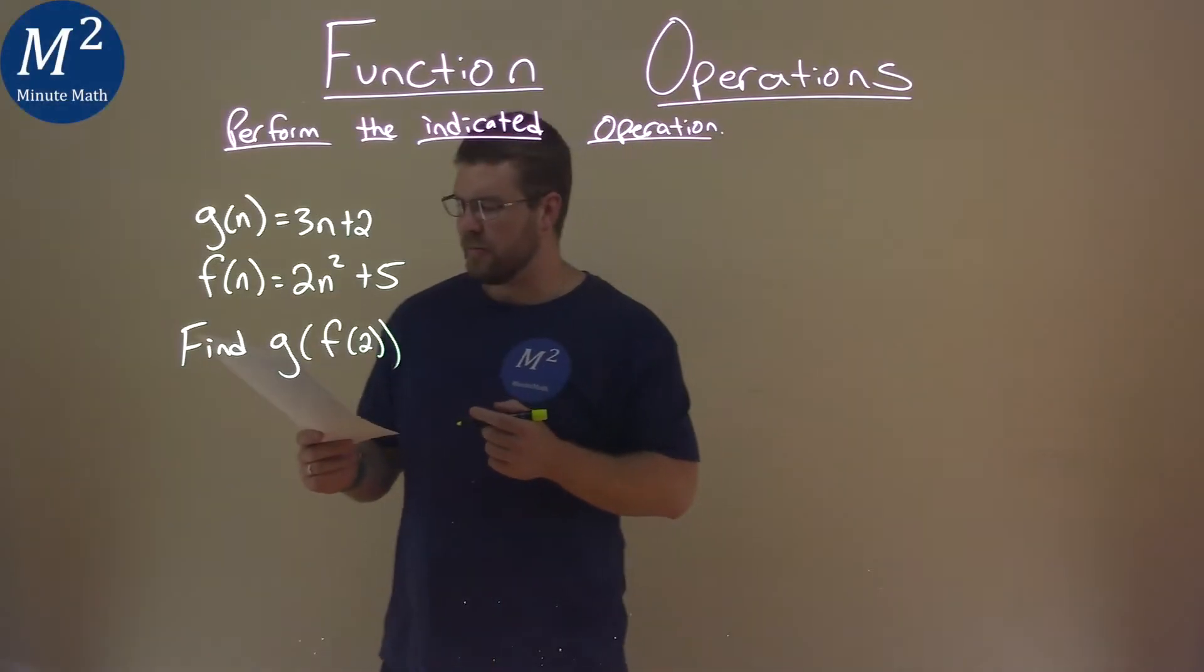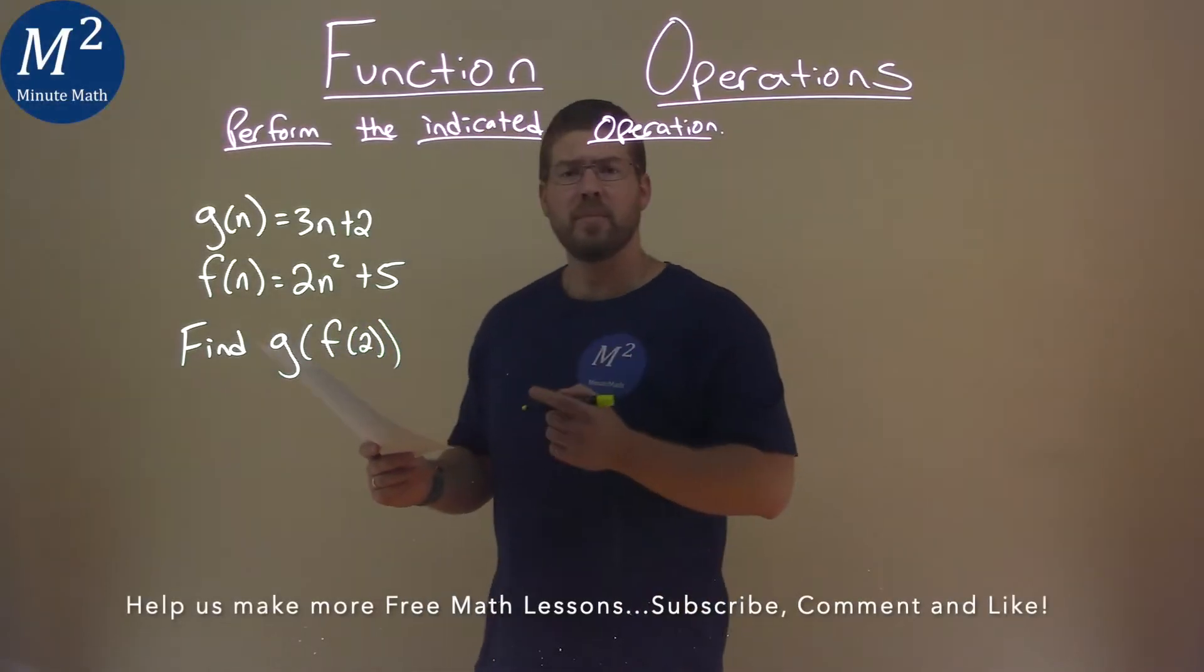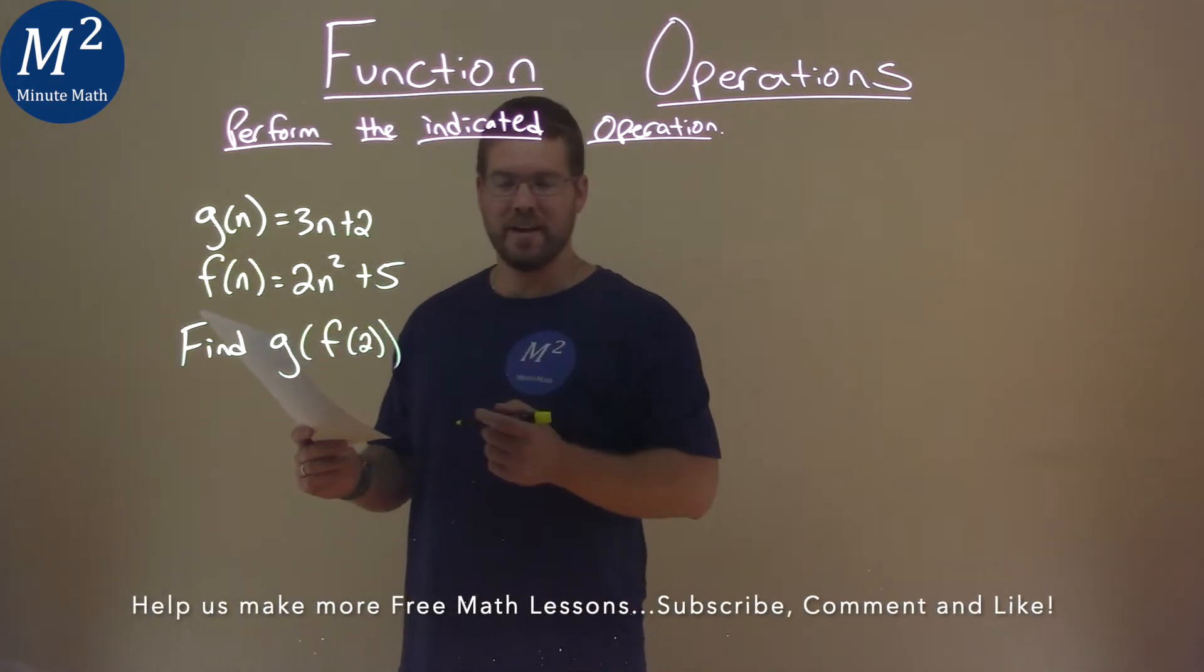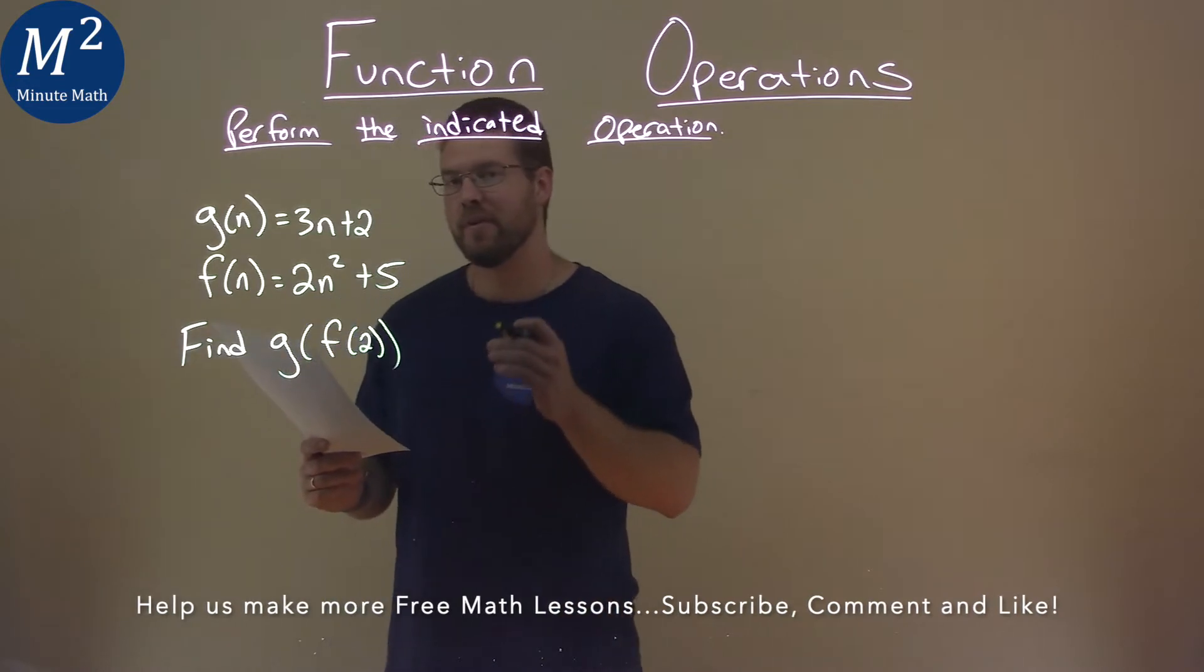We're given this problem: g(n) = 3n + 2 and f(n) = 2n² + 5. We need to find g(f(2)).